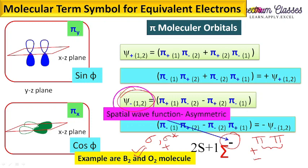This is very important to understand for assigning term symbols. I will elaborate in the next video with detailed examples of boron (B₂) and oxygen (O₂). I hope you understood this concept — I tried my best to explain it in the easiest manner. Give it a thumbs up, like and share with your friends. Thank you all!